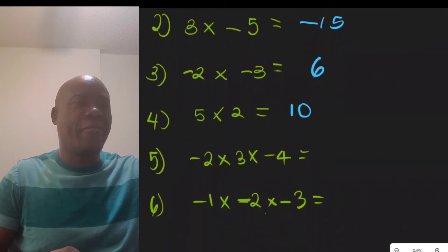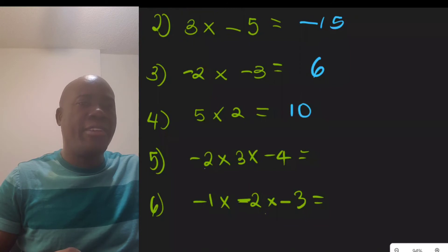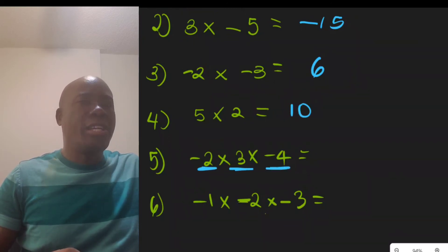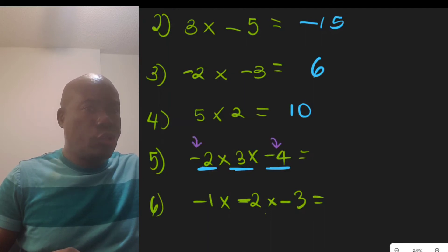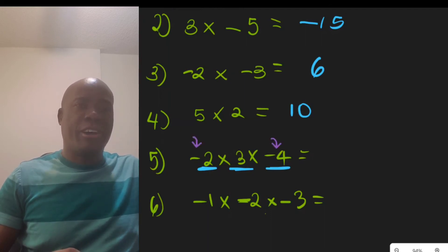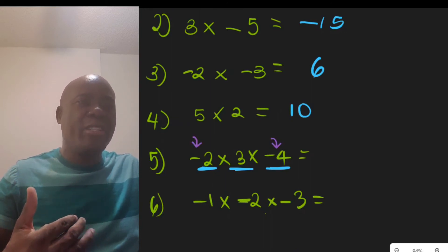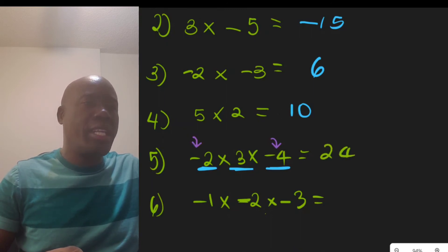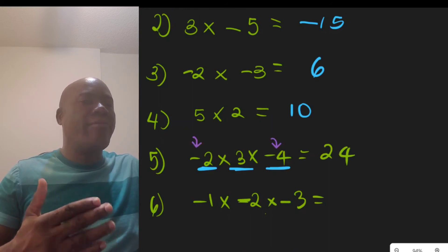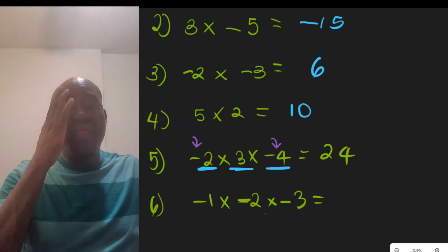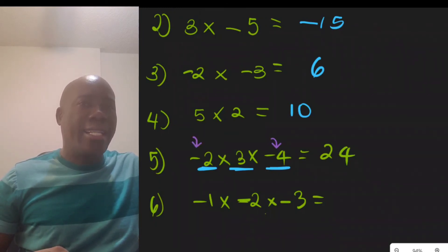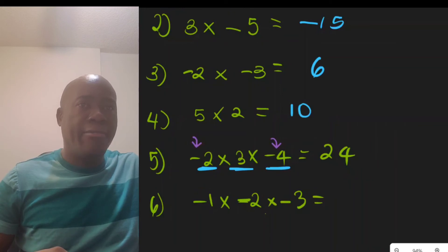At situation 5, we have negative 2 times positive 3 times negative 4. We can see there are two negative numbers — an even number — so the answer will be positive. Calculating the magnitude: 2 times 3 is 6, and 6 times 4 is 24. Because there are two negatives in the mix, the result is positive 24.